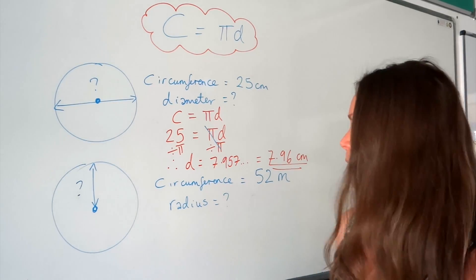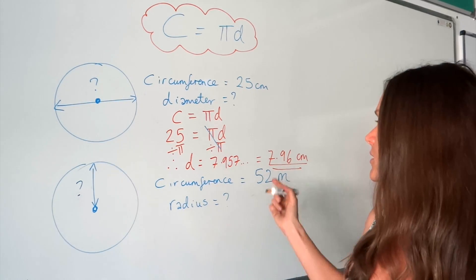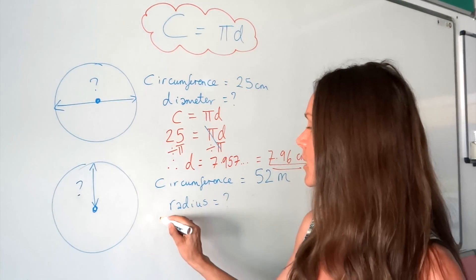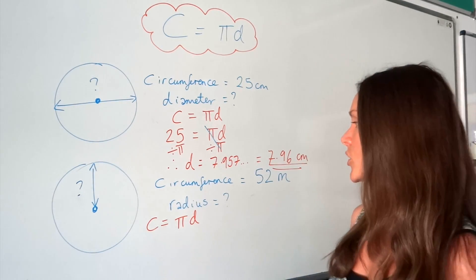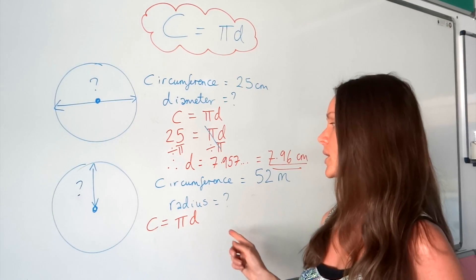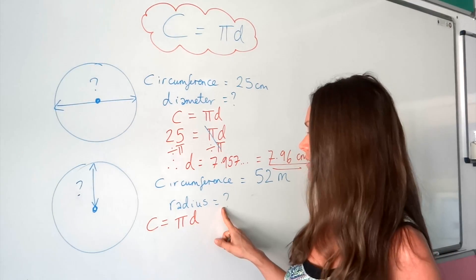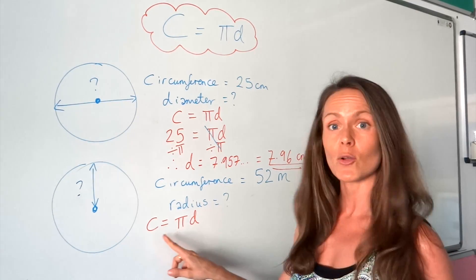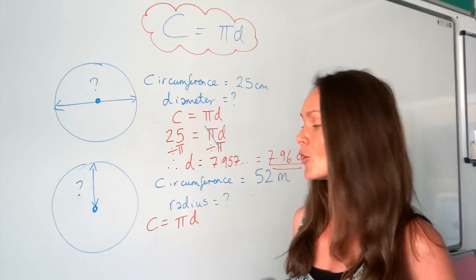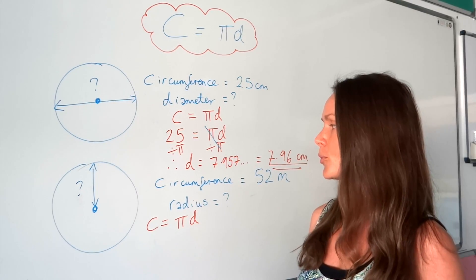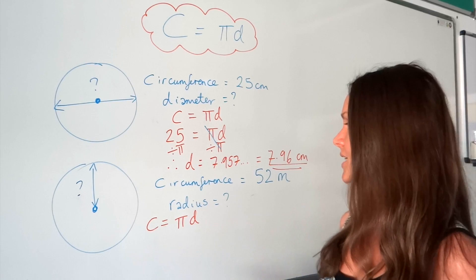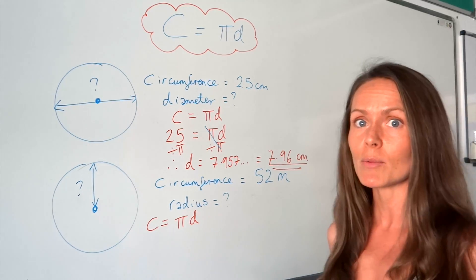We're going to start the same way. Because we're given the circumference, I'm going to write down the formula for circumference: C equals π d. Don't worry that this question asks for the radius and we don't have r in our equation. We'll worry about that later. First, let's just find the diameter like we did in the first example.